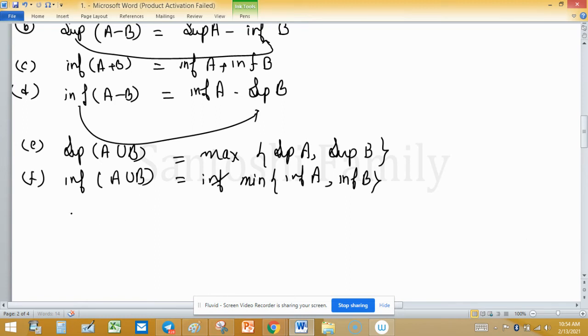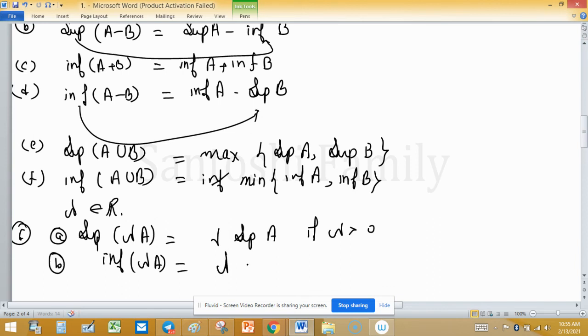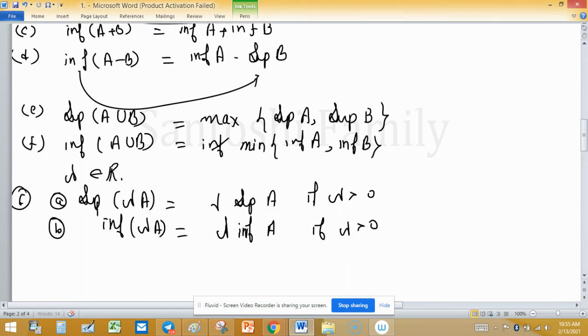Similarly, if lambda is in R and A is a bounded subset of R. Supremum of lambda times A will be lambda times supremum of A if lambda greater than 0. Infimum of lambda A will be lambda infimum of A if lambda greater than 0.